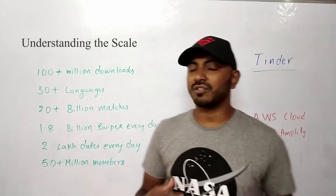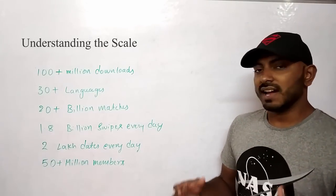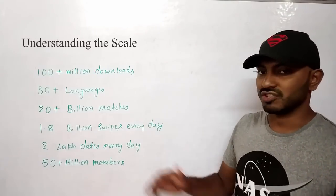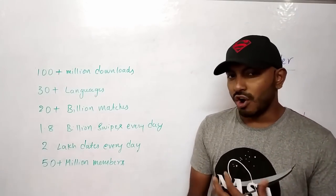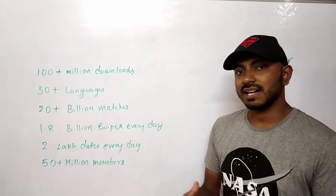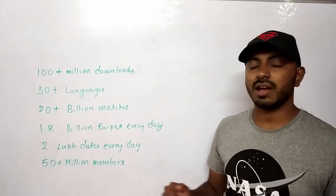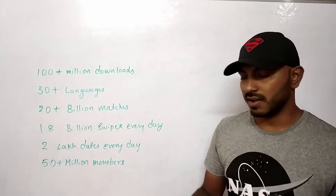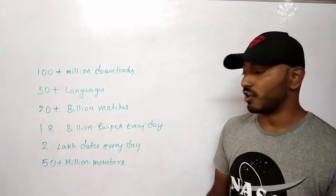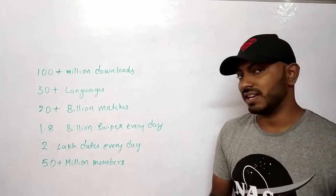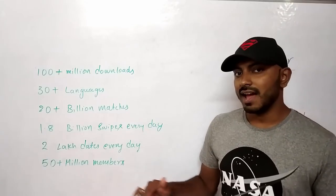To understand the scale of Tinder we have to look at this data. There are about 100 plus million downloads of the mobile application. It supports 30 plus languages, has about 3 billion matches, and about 1.8 billion swipes every day including left and right swipes, which also means it generates about 1.8 billion messages every day. Including super likes and everything, think of almost 2 billion messages every day to be processed, and about 200,000 dates every day.